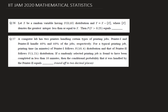Hello, today we are going to solve two questions from IIT JAM 2020 Mathematical Statistics. The questions are 56 and 57 and they are both numerical answer type questions. In this type of question we need to find a numerical answer to the corresponding questions and put it in the blank space.